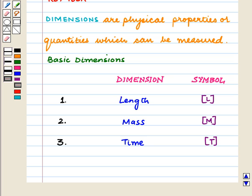Some of the basic dimensions are length, mass, and time. The symbol of length is [L], the symbol of mass is [M], and the symbol of time is [T].